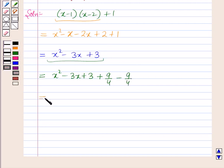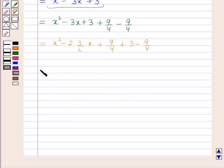Further, this is equal to x² - 3x, which can be written as 2 × (3/2) × x plus 9/4 plus 3 minus 9/4. So this is equal to x² - 2 × (3/2) × x plus 9/4, which can be written as (3/2)² plus 3 minus 9/4, which gives plus 3/4.